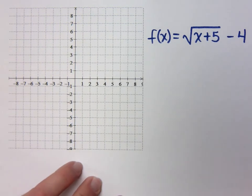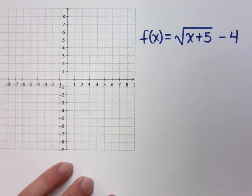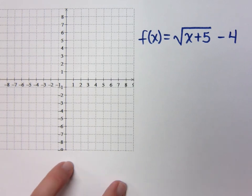To the left. Oh, there we go. Let's look at this function. The square root of x plus 5 and then minus 4.